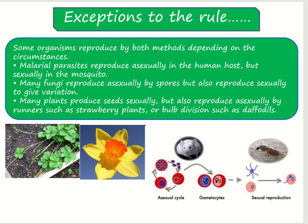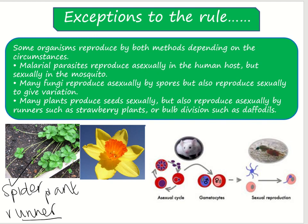There are some exceptions to the rule that you need to know about. Some plants, like strawberry plants and spider plants, reproduce asexually by producing runners, though they can reproduce sexually as well. They grow an elongated stem with a little plant on the end — an identical copy of the parent plant. The stem deposits the new plant further away so it's not competing for resources. That little plant then grows its own roots, the runner decomposes, and you have two identical copies.